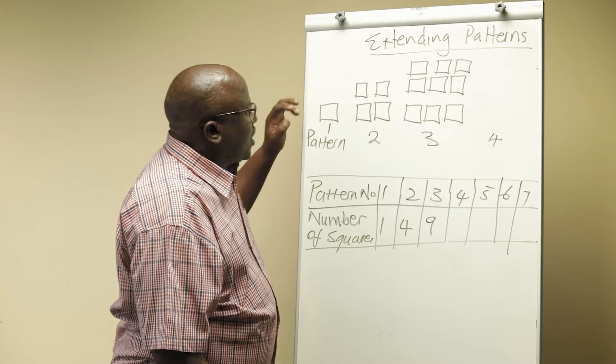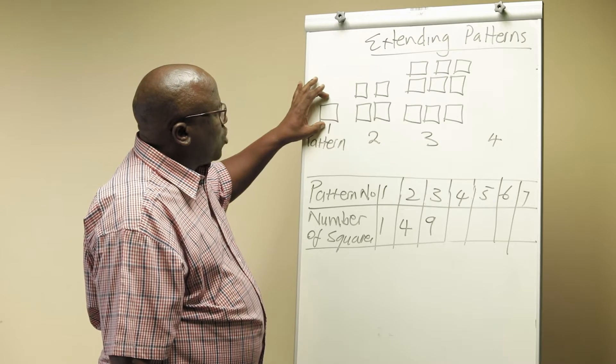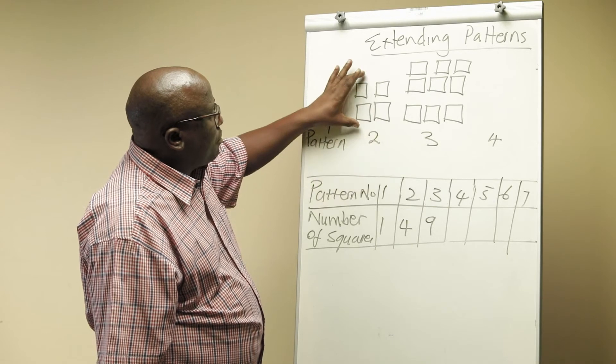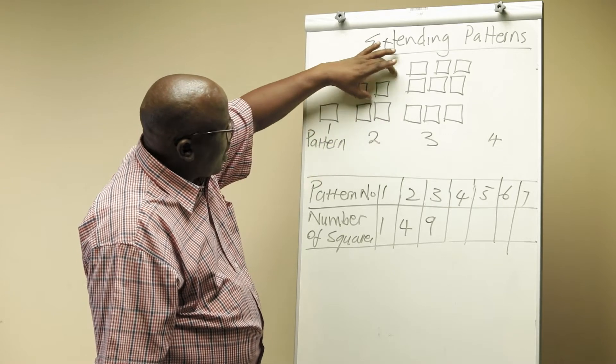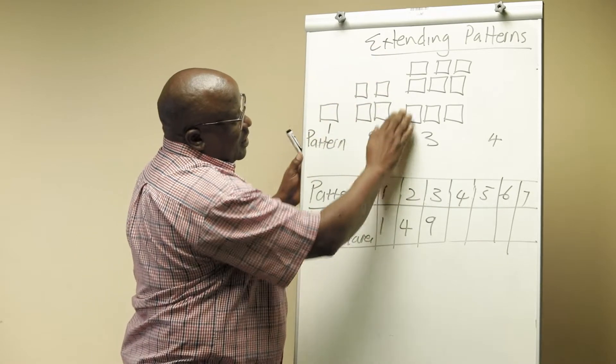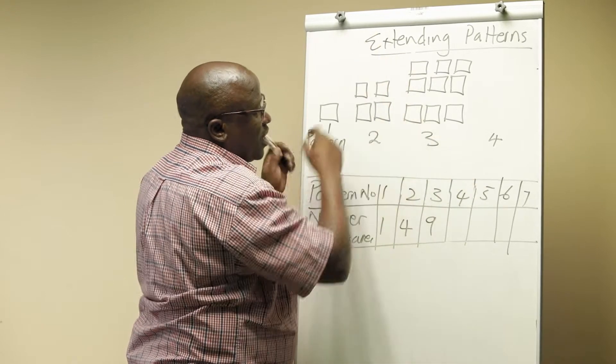I want us to look at what is happening here. If you look at pattern number 1, you'll see that there is one square. When you get to pattern number 2, there are two squares down and two squares up. When you get to pattern number 3, there are three squares at the bottom and three squares going up.